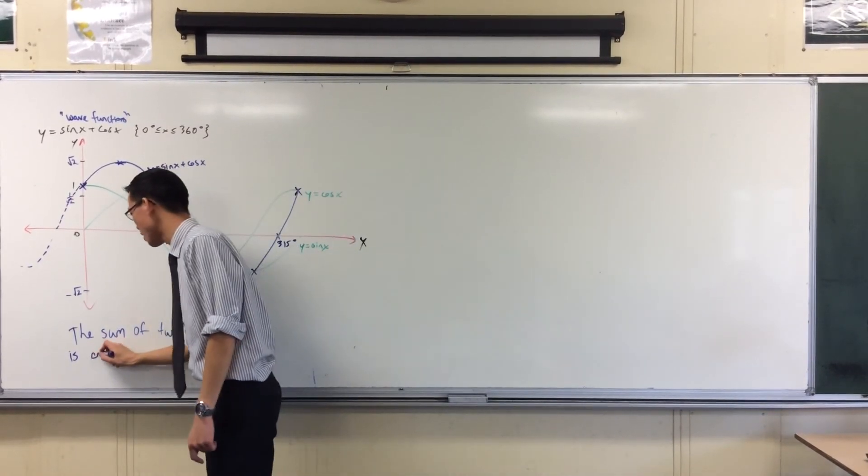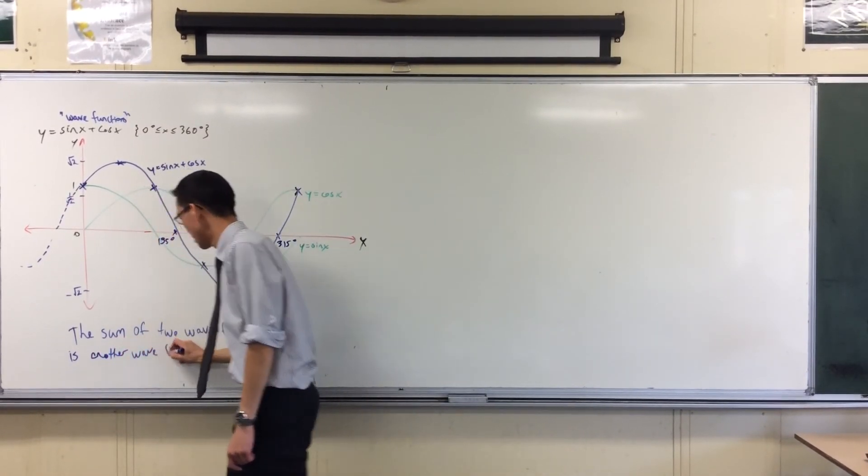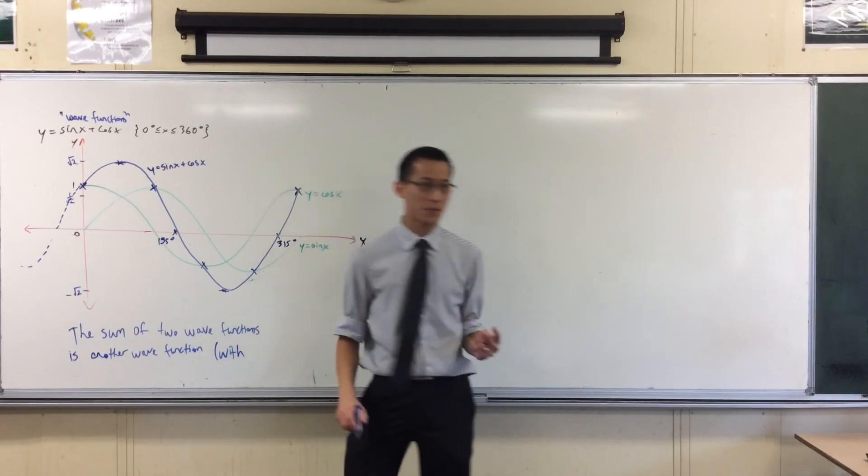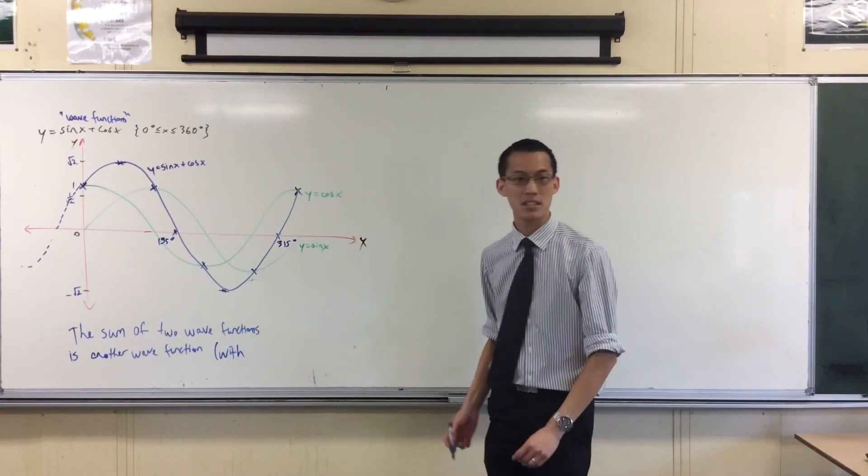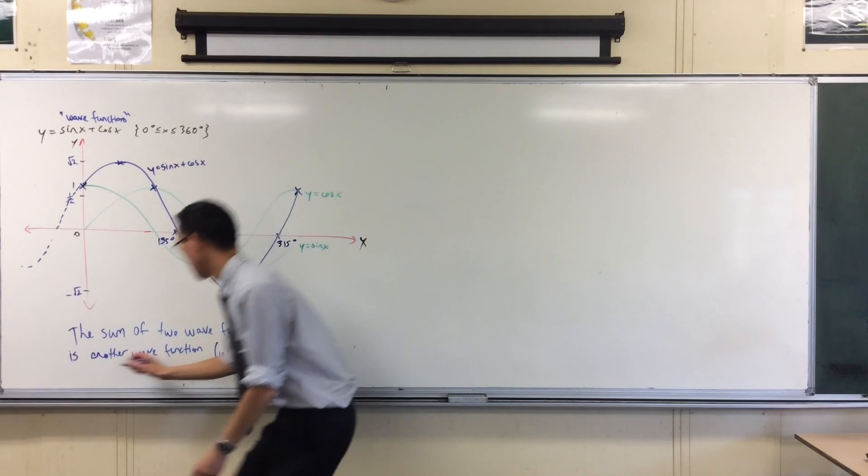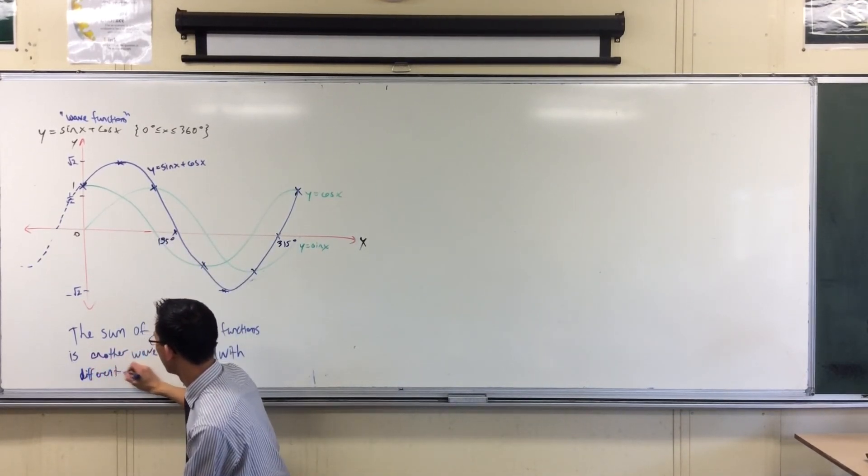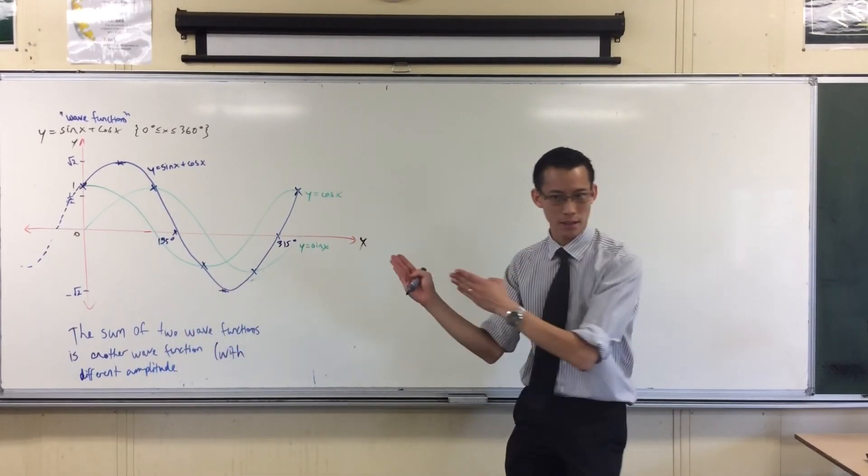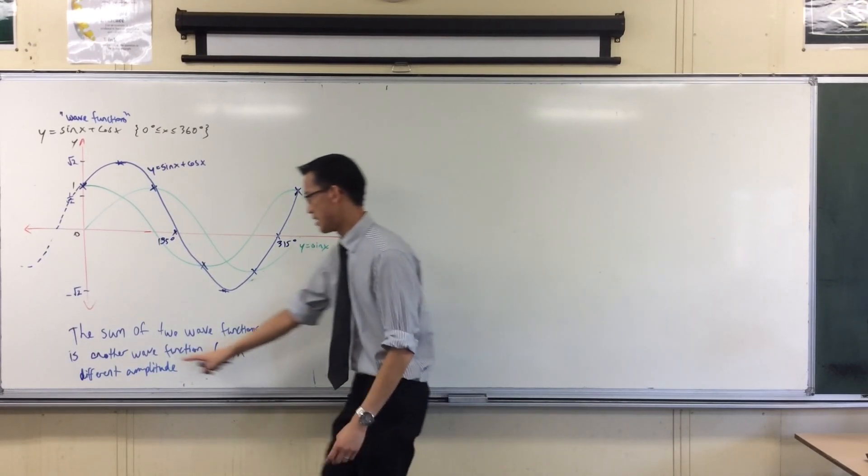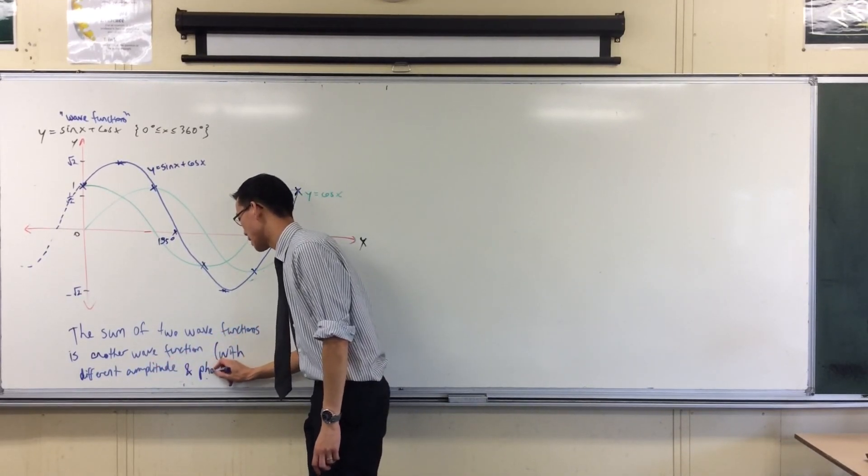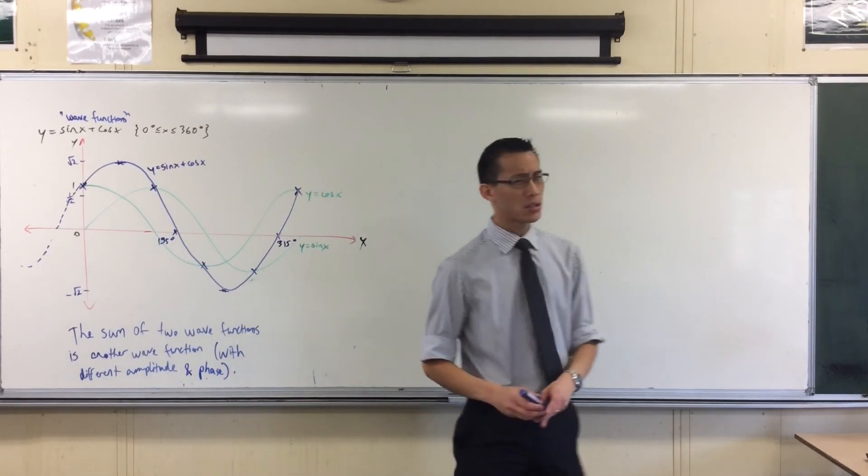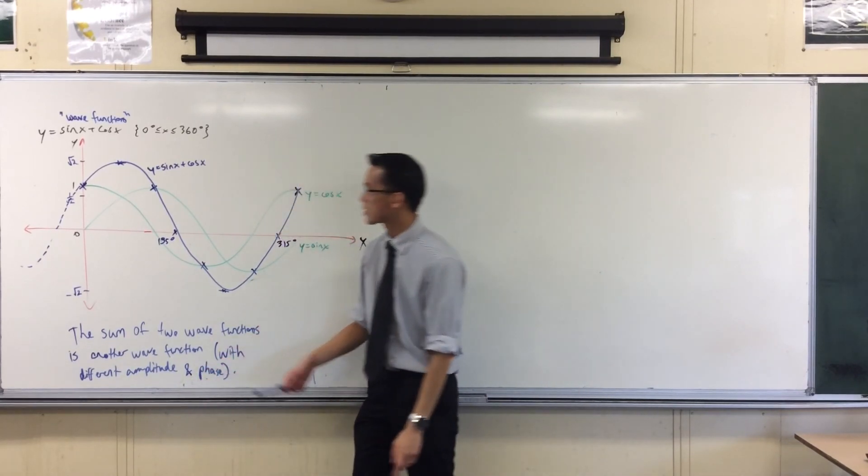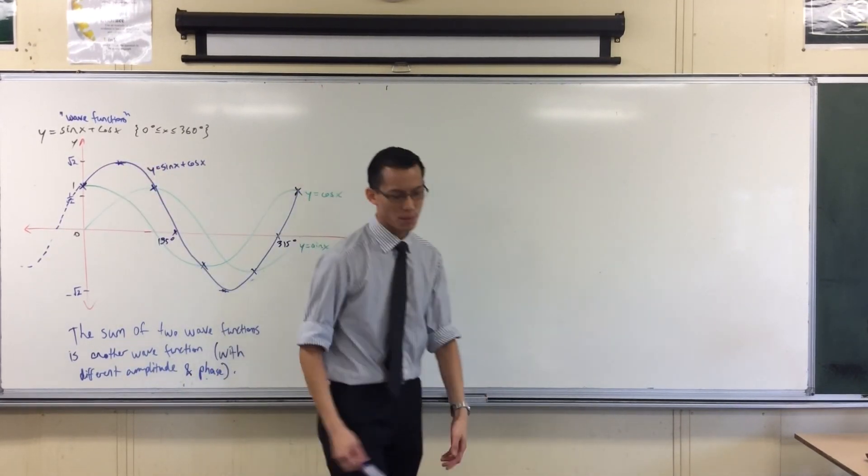Is another wave function, but with two different qualities that we just pointed out. Vertically, it has a different amplitude, with a different amplitude. But also, it's been shifted horizontally. So what we call that is phase. Different amplitude and a different phase. So we're going to find what this amplitude and phase are by tackling this with a surprising friend.